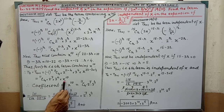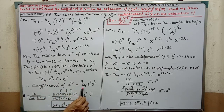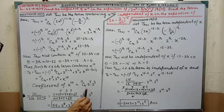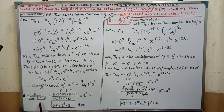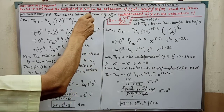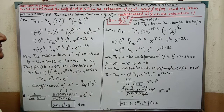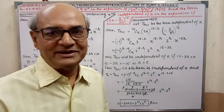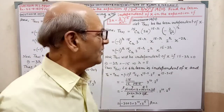Therefore, the coefficient of x to the power 10 — this is the coefficient. By simplifying this and simplifying further, finally we are getting 55 into 2 to the power 8 into 3 to the power 5. This is the answer. So sum is completed — very simple. You have to remember the formula only.